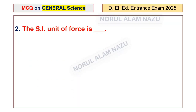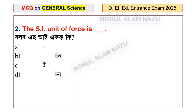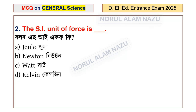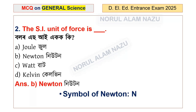The SI unit of force — the options are joule, Newton, watt, and kelvin. The answer is Newton. The symbol for Newton is N.